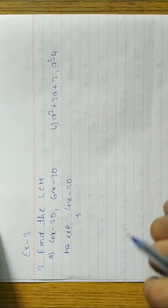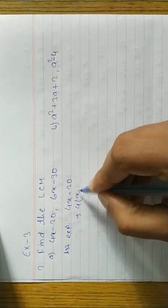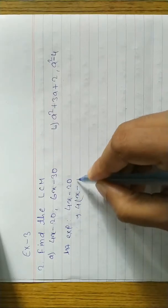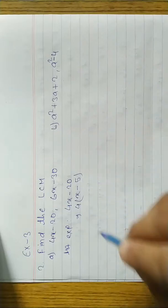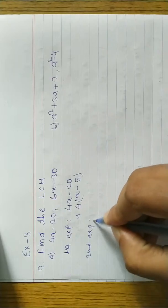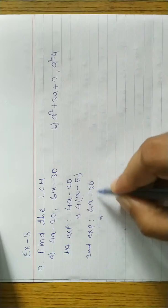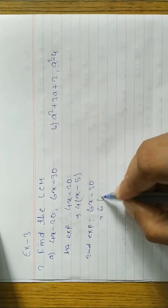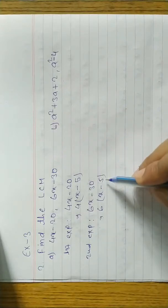First we take common, then factorize or use a formula if we can. For 4x minus 20, the common factor of 4 and 20 is 4, giving 4 into x minus 5. For the second expression, 6x minus 30, the common factor is 6, giving 6 into x minus 5. This is linear, so we cannot factorize further.